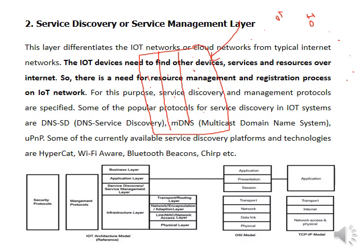For this purpose, service discovery and management protocols are specified. Some popular protocols for service discovery in IoT systems are DNS, DNS-SD, mDNS (multicast domain name system), and micro-PnP. Some currently available service discovery platforms and technologies include Hypercat, Wi-Fi Aware, Bluetooth Beacons, and Chirp.